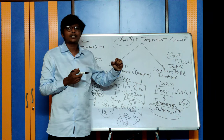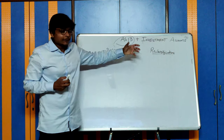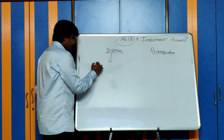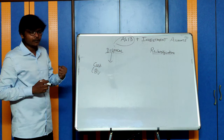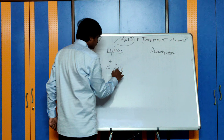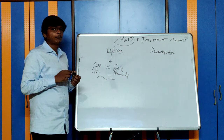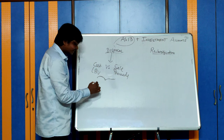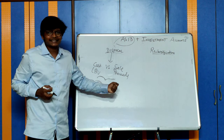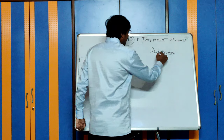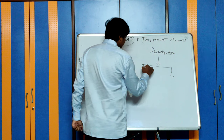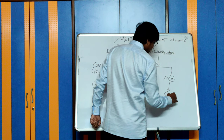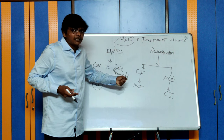Now let us quickly complete a few small concepts in AS-13 before we proceed to investment accounts. Whenever there is disposal of an asset, compare the current book value versus the sale proceeds. The difference — profit or loss — can be booked in your profit and loss account. However, such difference is subject to the concept of cum-interest and ex-interest, which we will see in the next section.